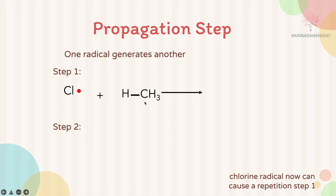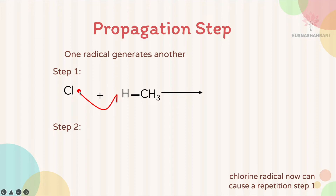The Cl free radical forms a bond with hydrogen from methane. One electron transfers from Cl toward the hydrogen, and the hydrogen's electron is shared with carbon in methane — two electrons shared between hydrogen and carbon. One electron from this C–H bond transfers to form the new Cl–H bond, while the remaining electron transfers back to the carbon, using half-headed arrows to show single electron movement.